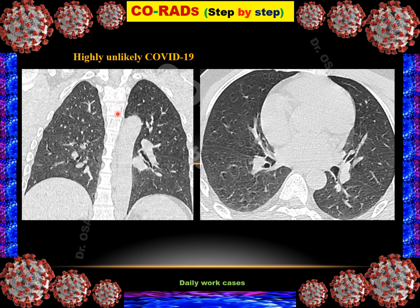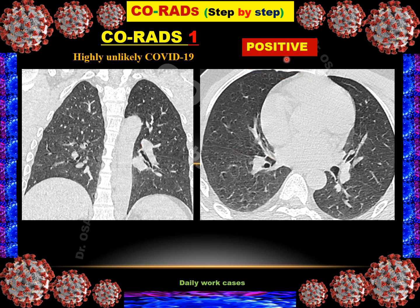Case 5: Axial and coronal HRCT showing no abnormality — no consolidations, no ground glass opacity, no nodules — completely normal. However, the patient is symptomatic with fever and shortness of breath, so we diagnose it as CO-RADS 1, meaning highly unlikely COVID-19 diagnosis. The RT-PCR result was unfortunately positive. Even if CO-RADS 1 is highly unlikely, it can still be positive — this is one case from my daily work: normal HRCT but positive COVID-19.